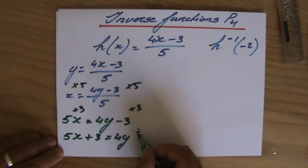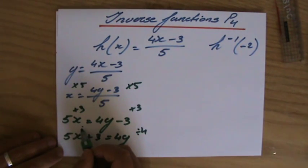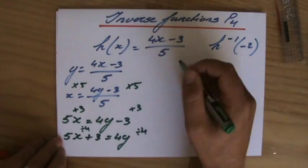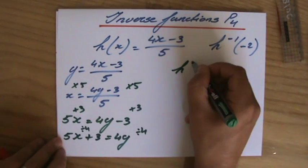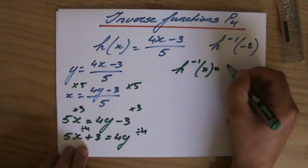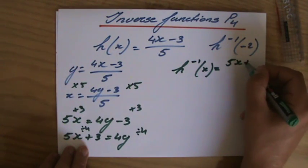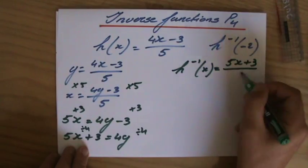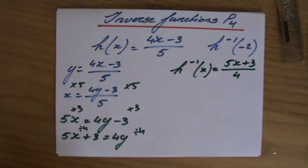The last thing you have to do is divide both sides by 4. So the inverse function of h is h^(-1)(x) = (5x+3)/4. That's the inverse function.